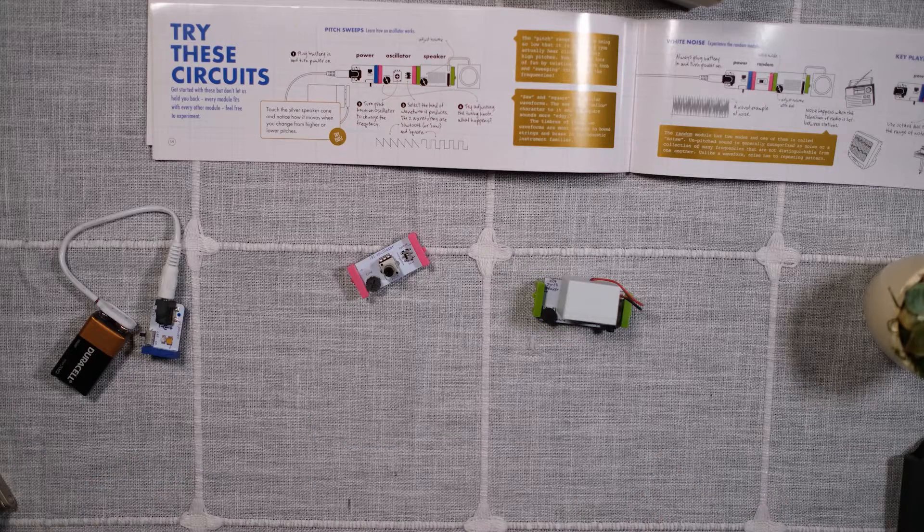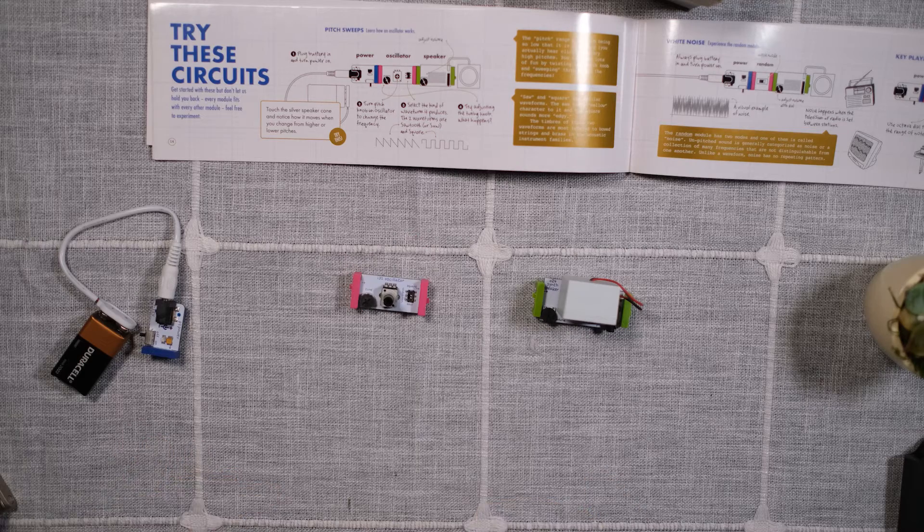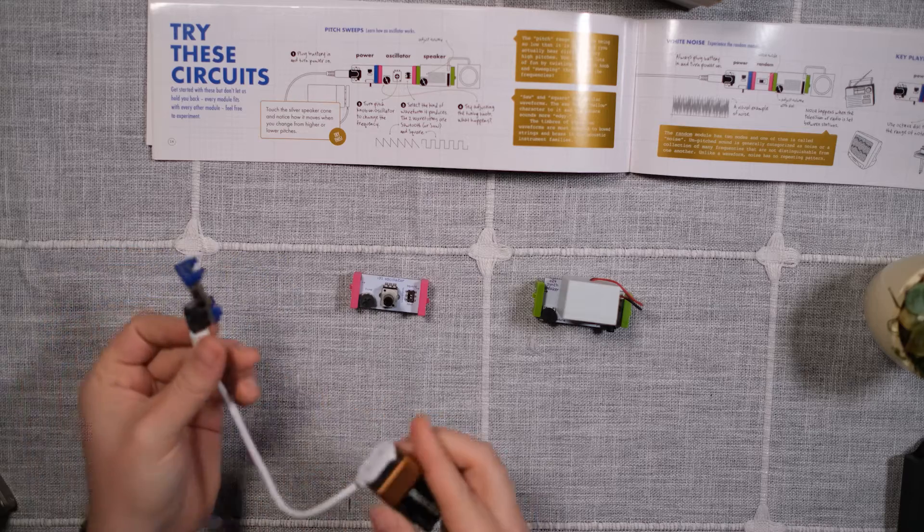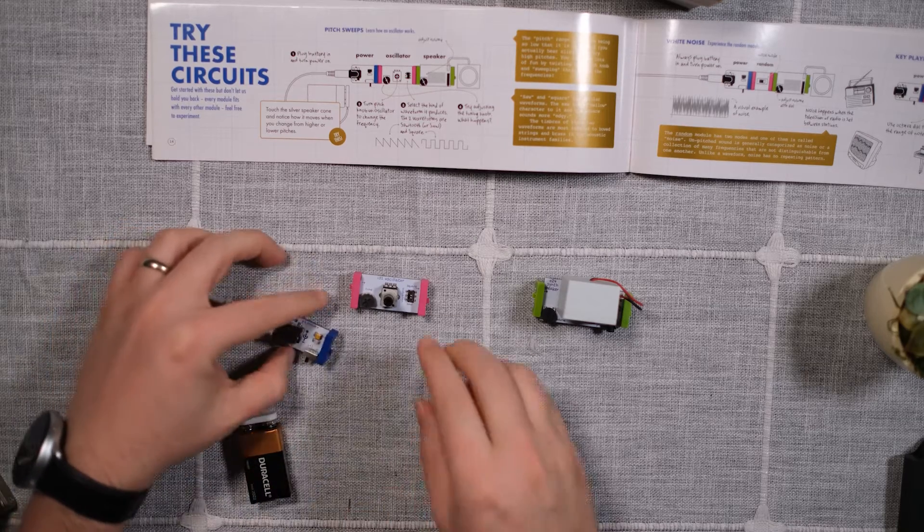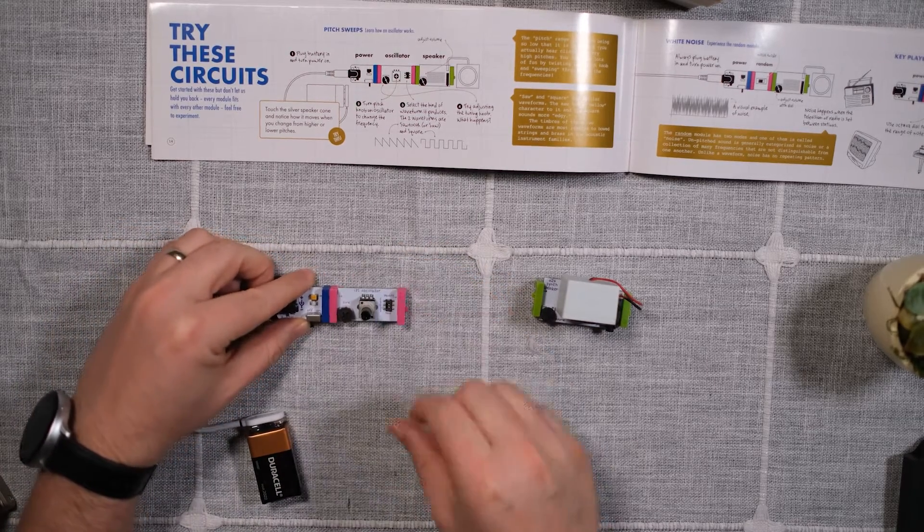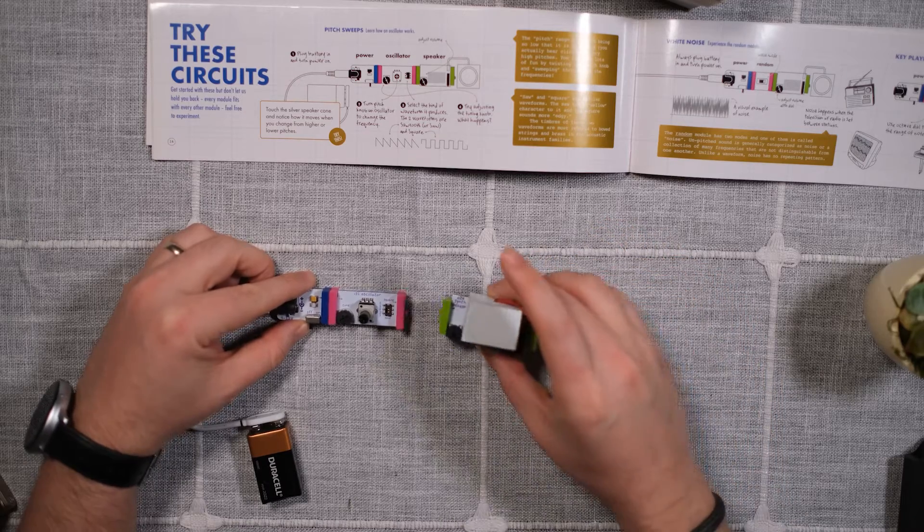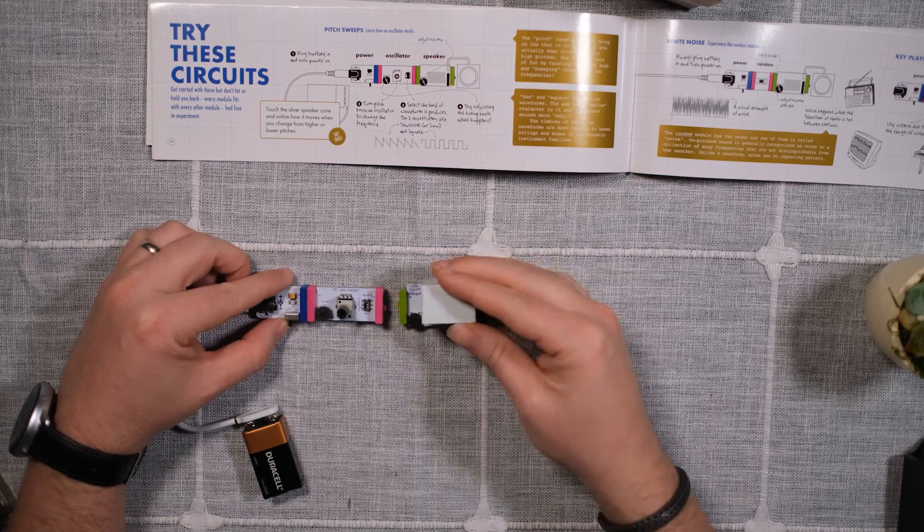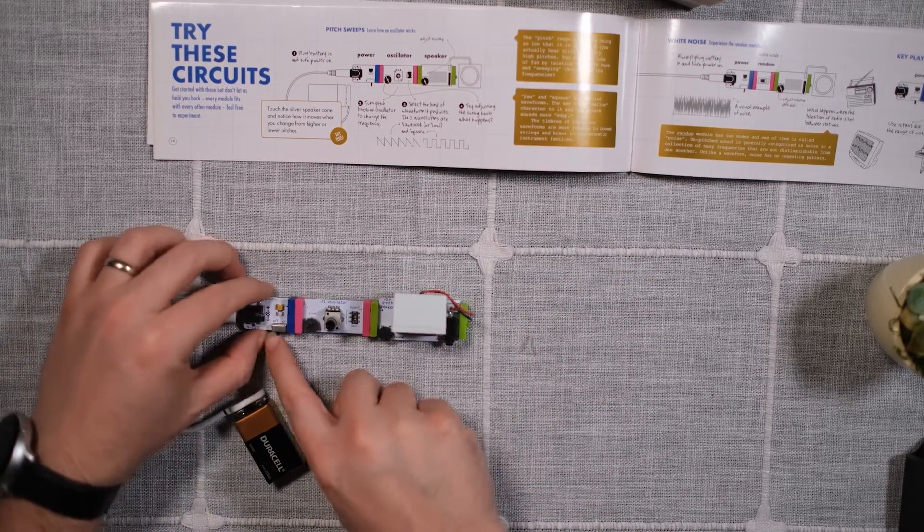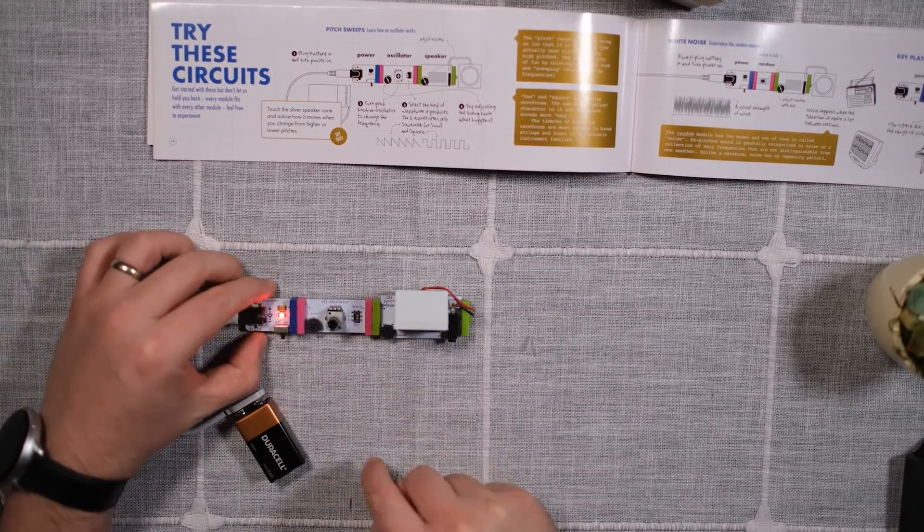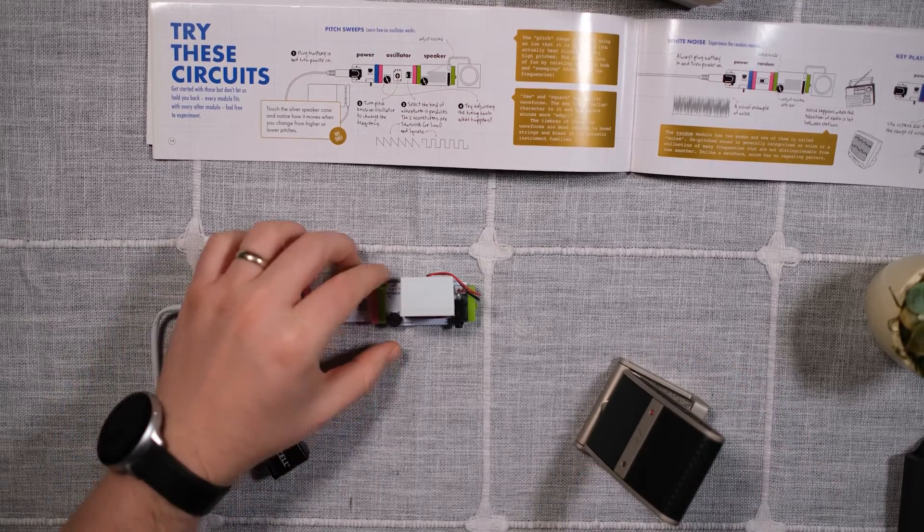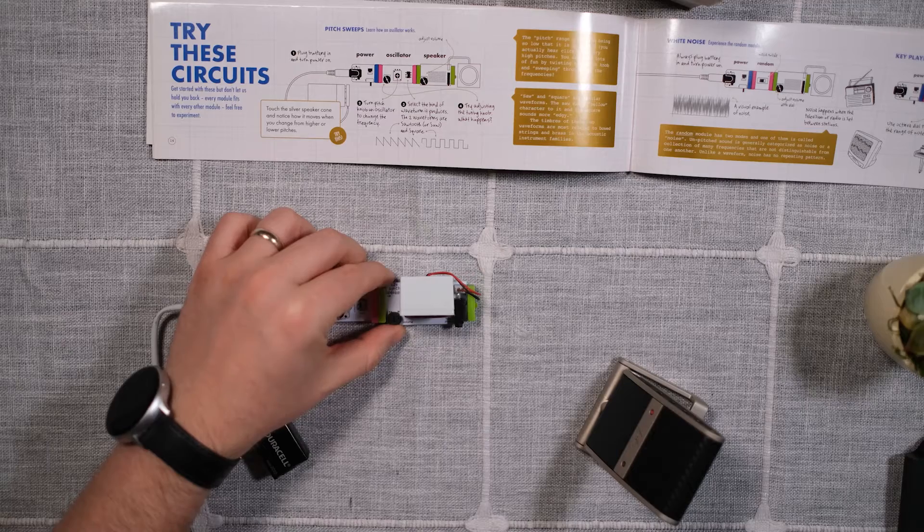The first little synth it suggests you build is just so that you can hear the oscillator by itself. So that's easy, you just have the power module here connected to the battery. You click it into the oscillator, then you click this little speaker module into the oscillator. And now when you turn it on, you put the microphone right in front of it, and then you can hear better what it sounds like.